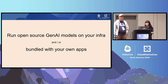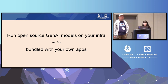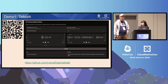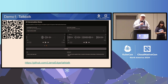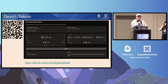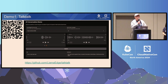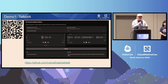We will start with two demos. We are going to run open source Gen AI models on your infrastructure or bundled with your own apps. Instead of explaining what WebAssembly is and why we use it for AI, I think it's easier if we just have a demo to see what we can do and what the benefits are. Why not use Python? Why not use Ollama? Why not use any of the other large language model toolkits out there?